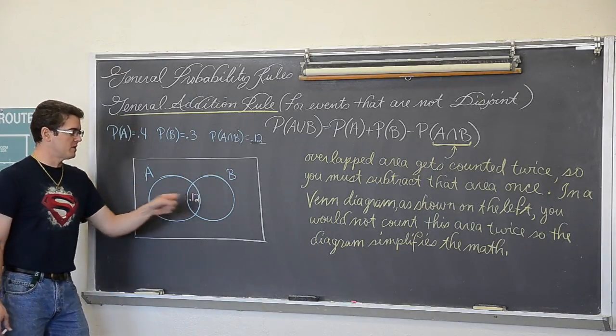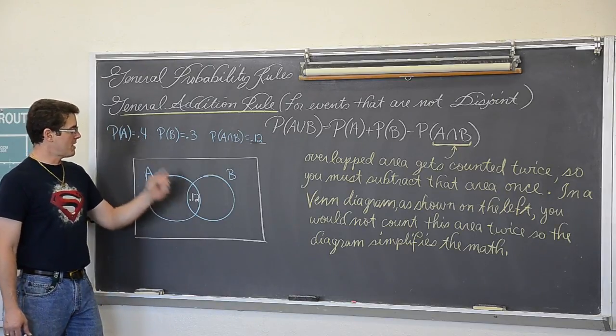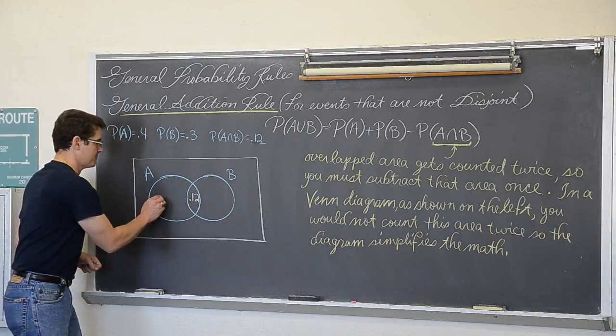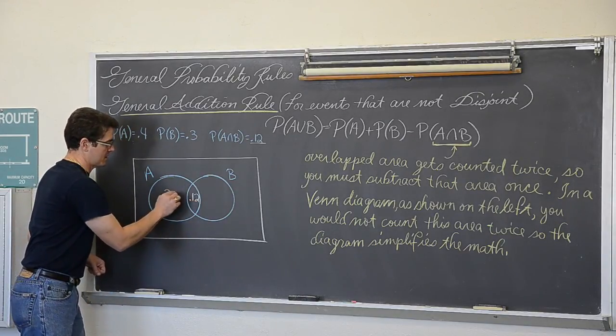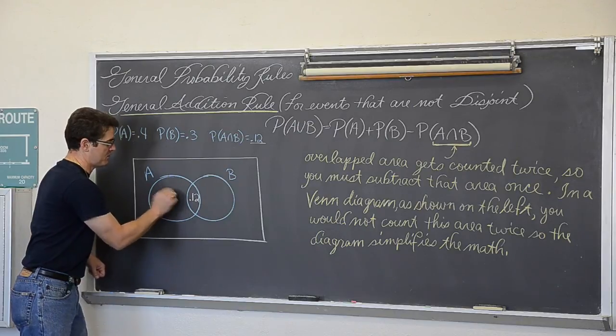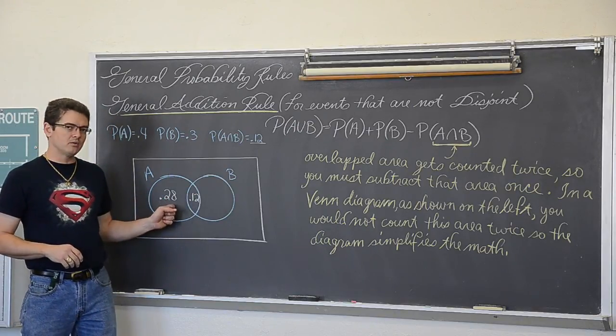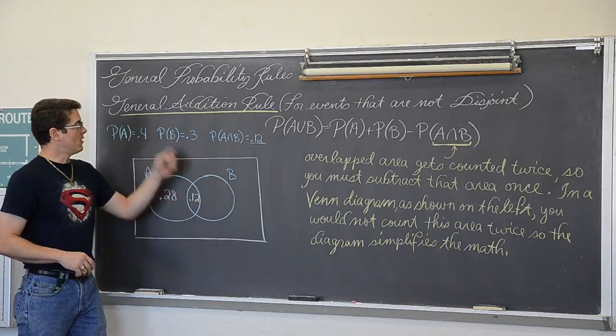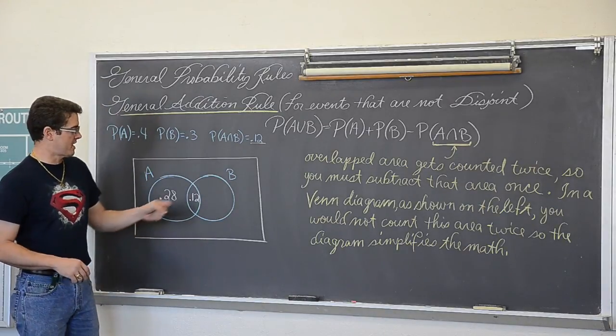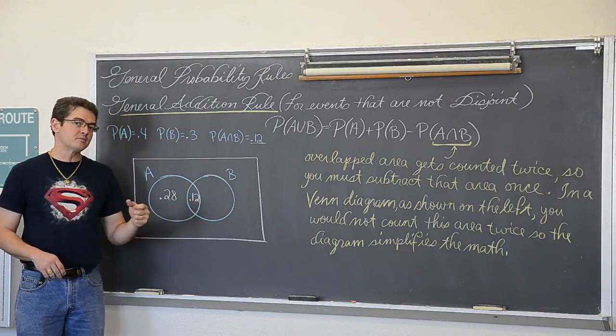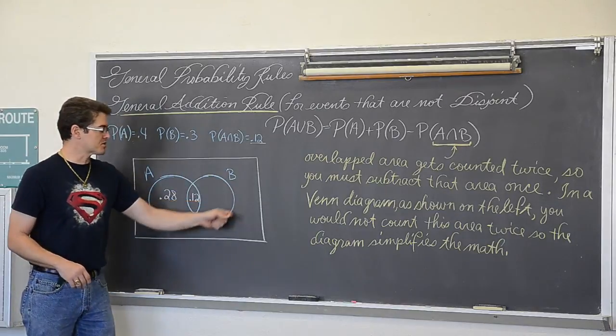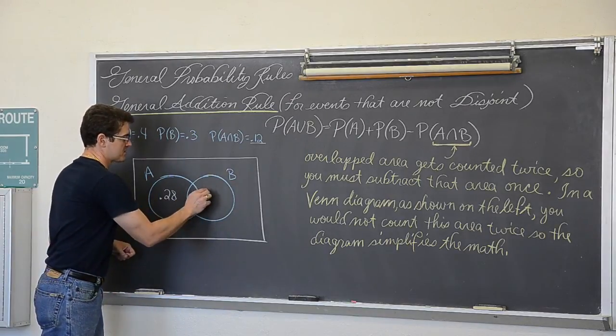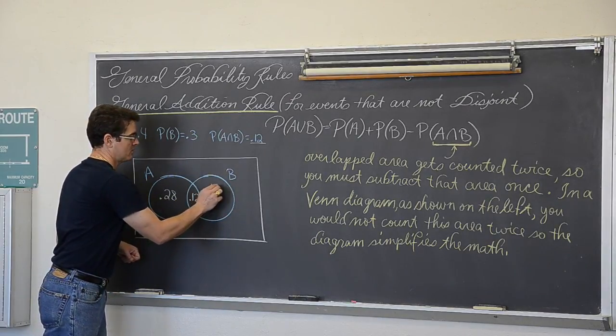Well this entire circle has 0.12 already represented. So 40 minus 10 is 30, minus another 2% is 28. So this area of the circle has the probability of 0.28. This circle, and I will explain how you label that in a second. This entire event B, well the entire probability of B occurring is 30%. Well we already have 12% counted in the overlapped area. So this entire circle by this notation has to add up to 0.3. So 0.12 means that this outside area is 0.18.